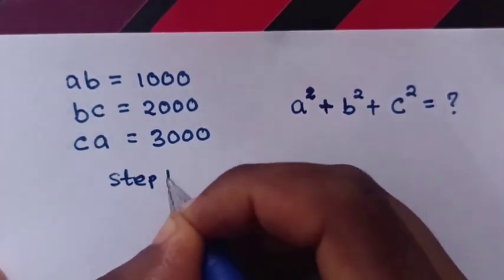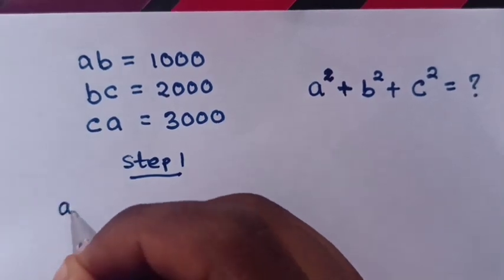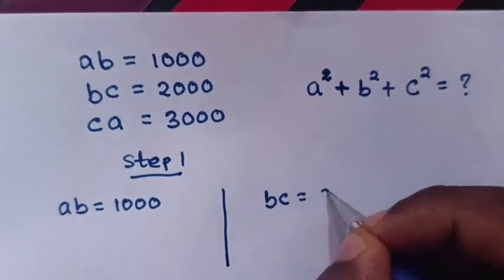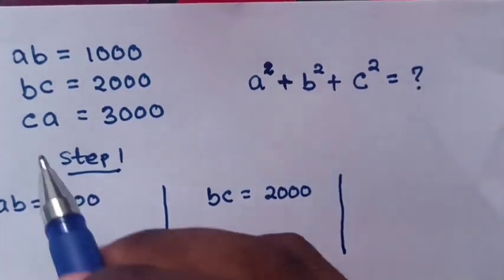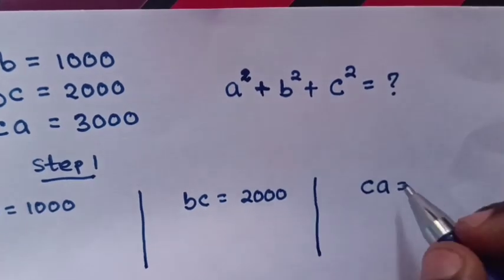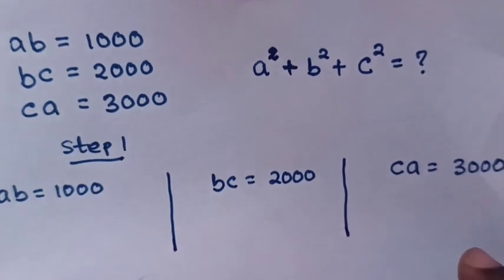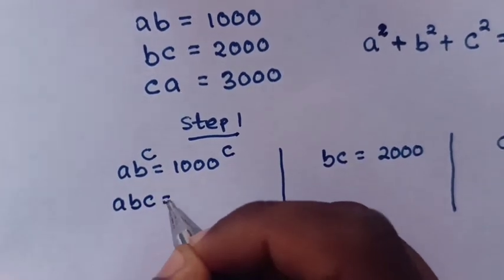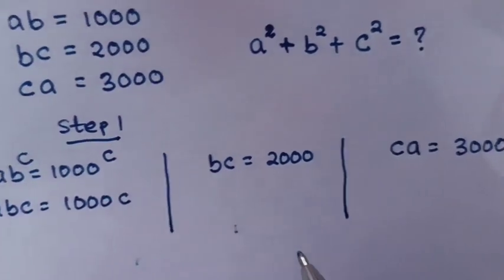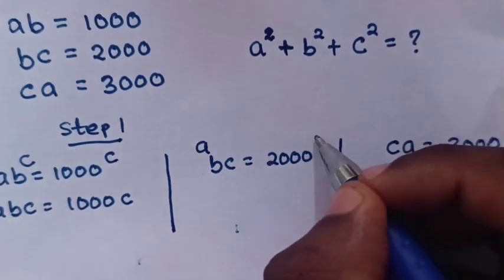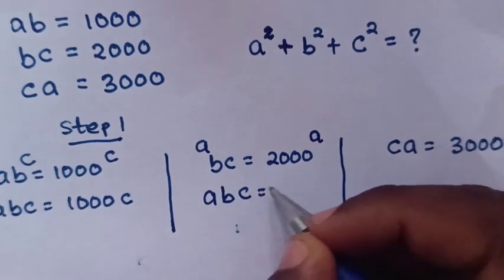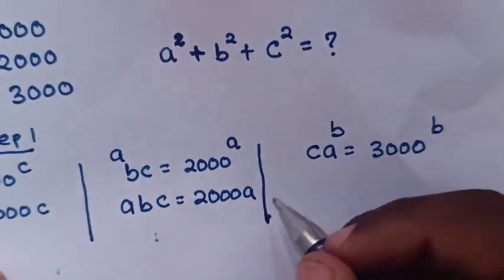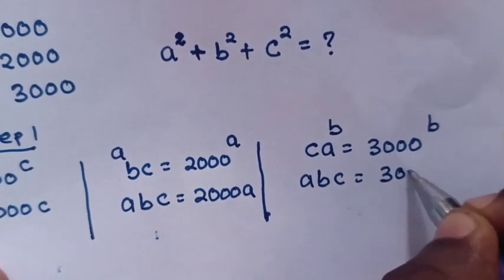Step 1: From AB equals 1000, BC equals 2000, and CA equals 3000. For AB, we multiply by C on both sides, so it becomes ABC equals 1000C. For BC, we multiply by A on both sides, so ABC equals 2000A. For CA, we multiply by B on both sides, so ABC equals 3000B.